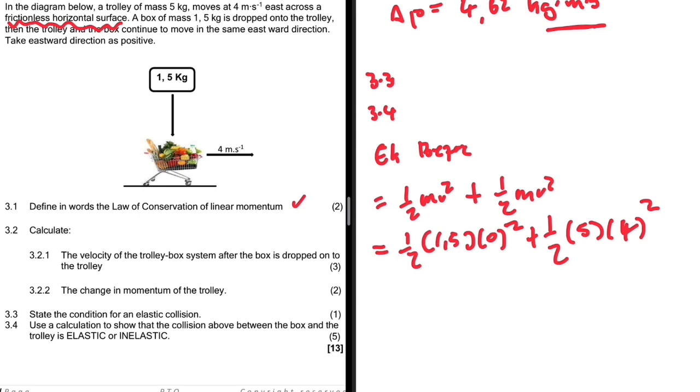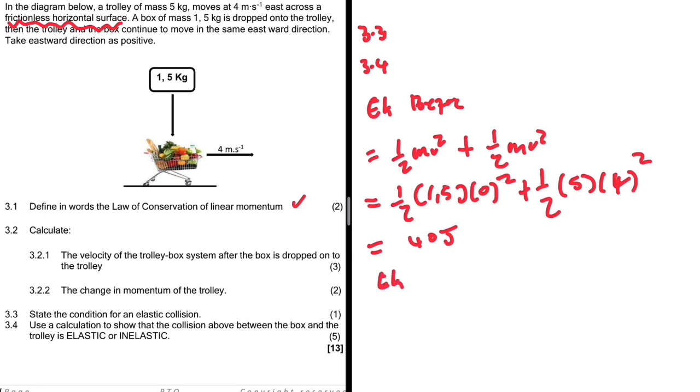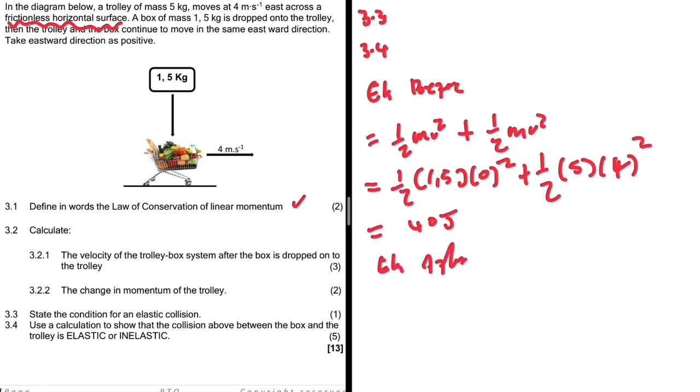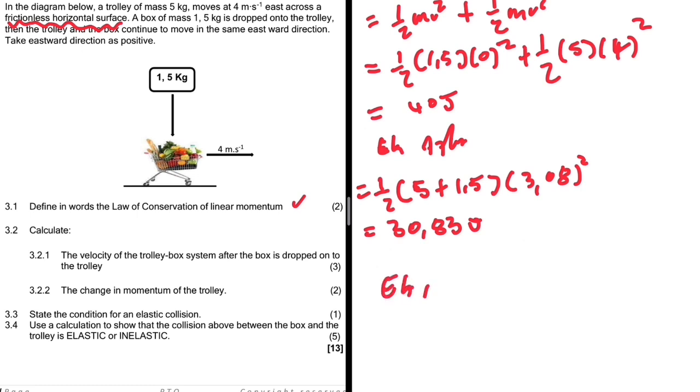And now let's calculate EK after the collision. After the collision, they move as one unit, so we are going to have half, 5 plus 1.5, multiplied by 3.08 squared, because after the collision they move as one unit. Let me just calculate that and see what happens. I'm getting 30.83 joules. So clearly, EK before is not equals to EK after.